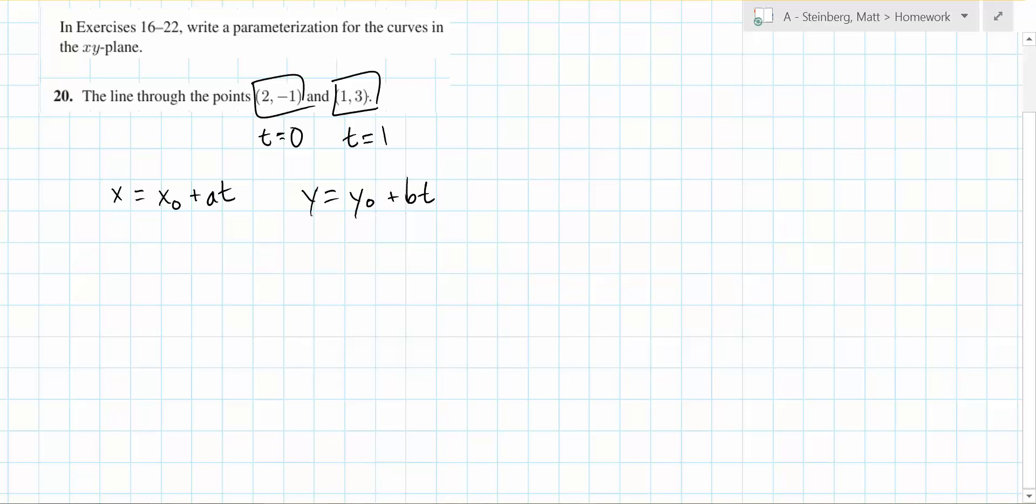So when t equals 1 and x equals 1, x₀, x when t equals 0 is 2 plus a times t, which is now equal to 1. So 1 equals 2a, so a equals 1/2.